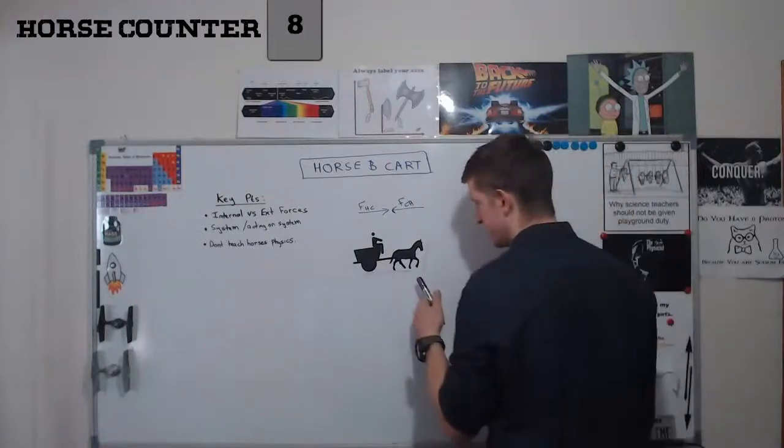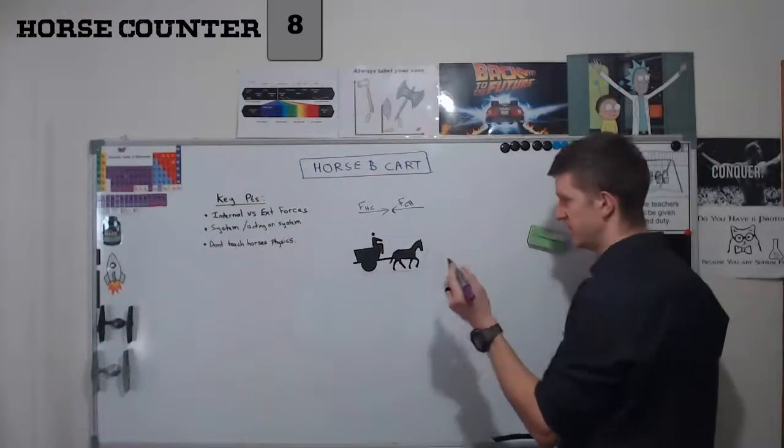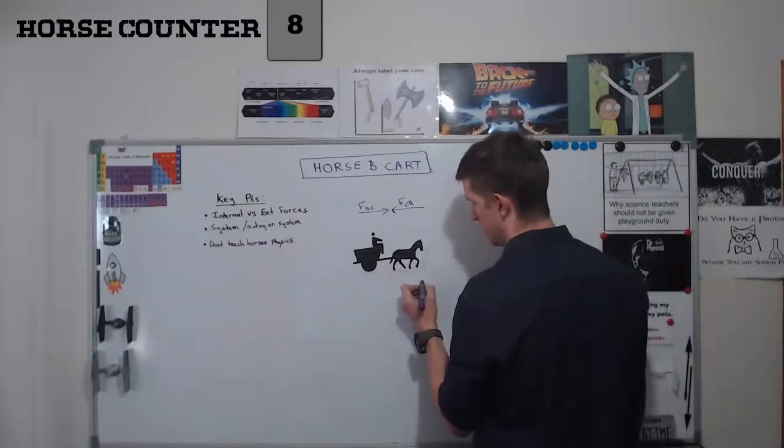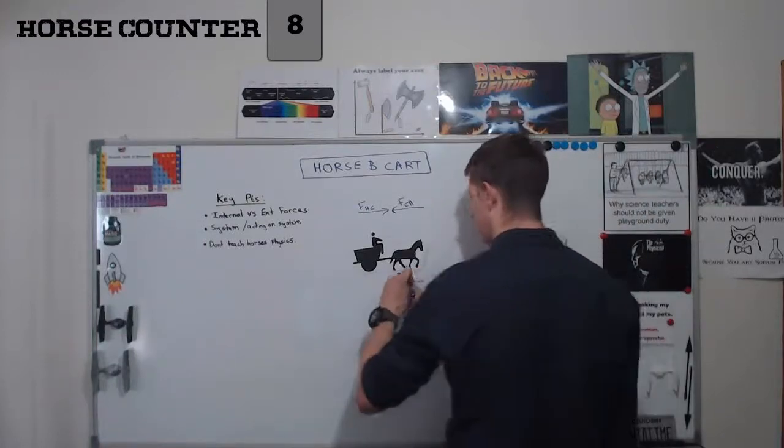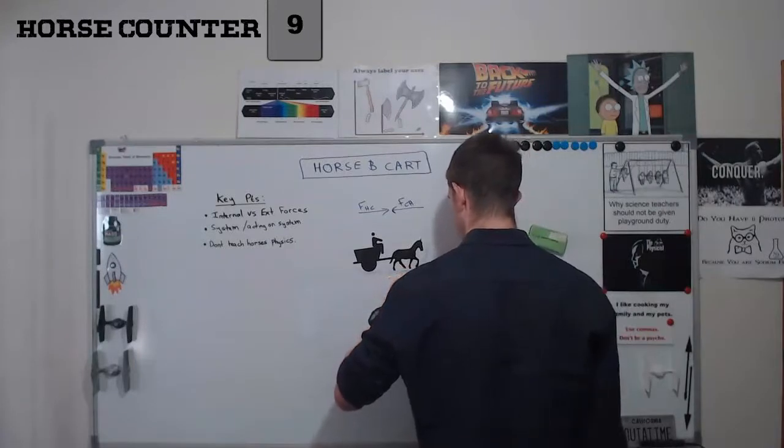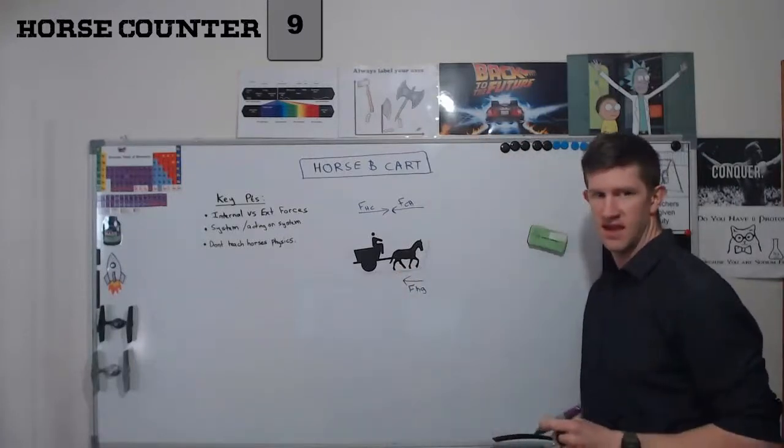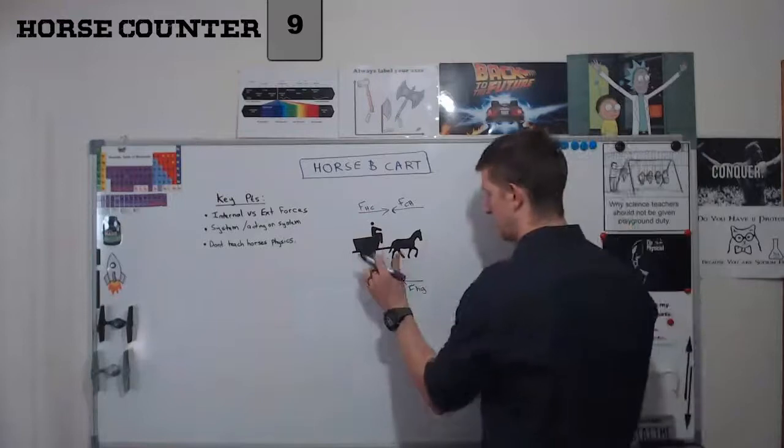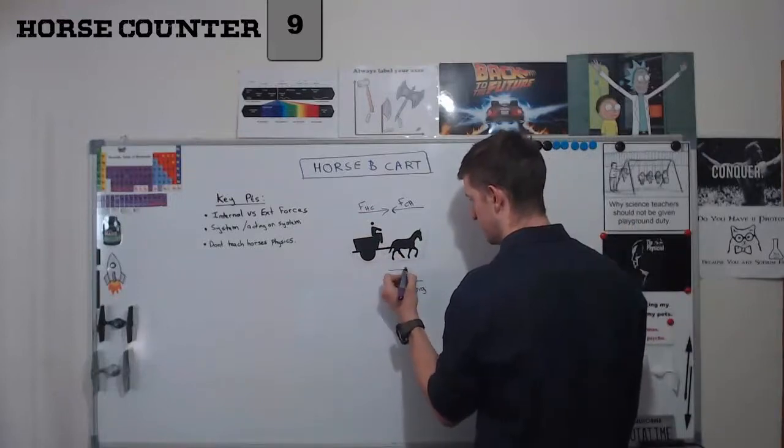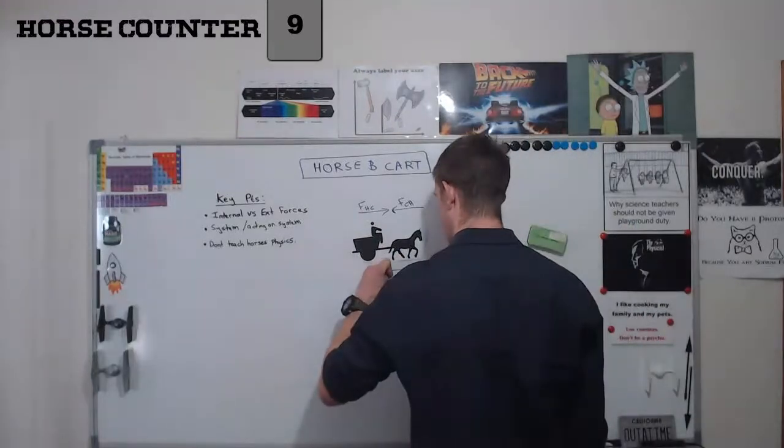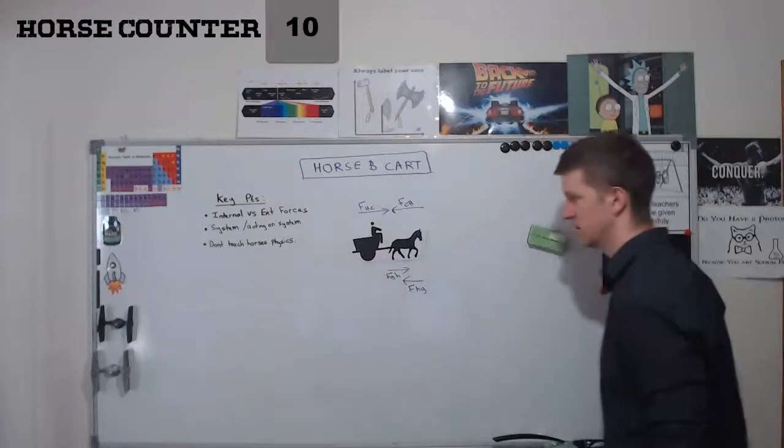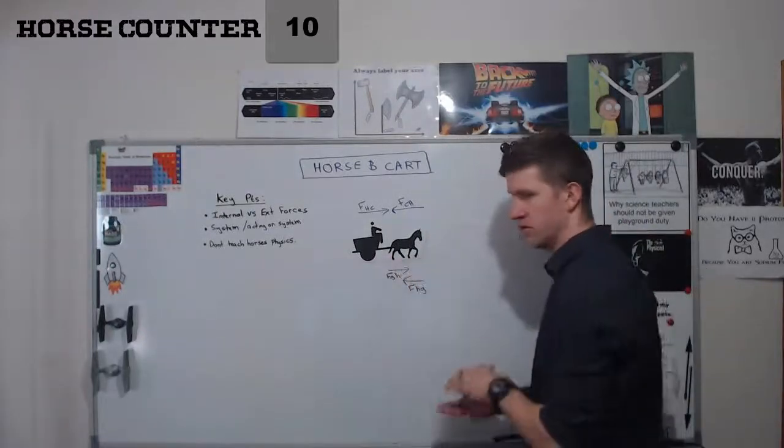Well, the horse is pushing on the ground. So there is a force down here of the horse on the ground. And then there's also going to be a force here of the ground on the horse, because that's the friction of the hoofs.